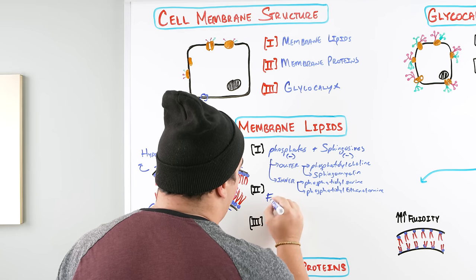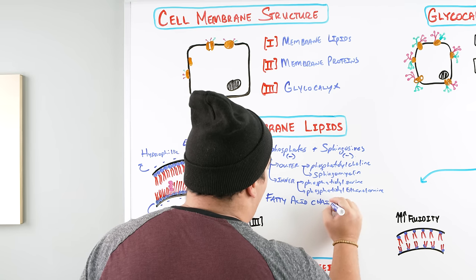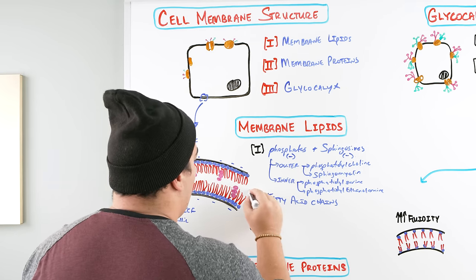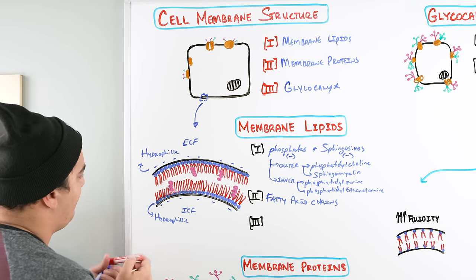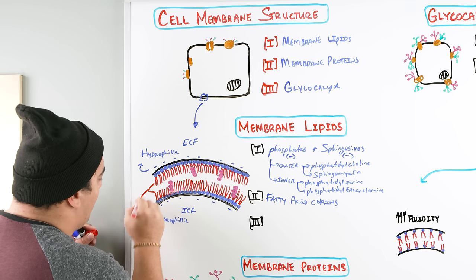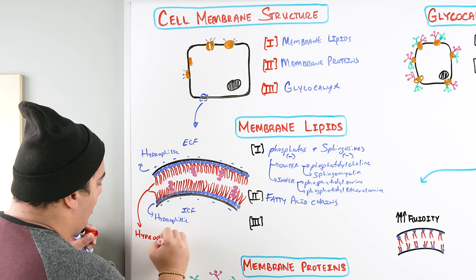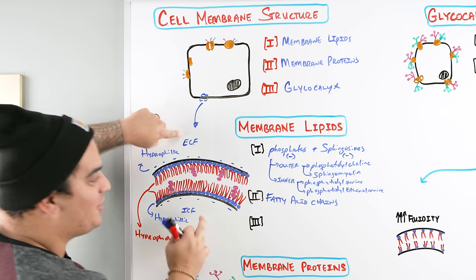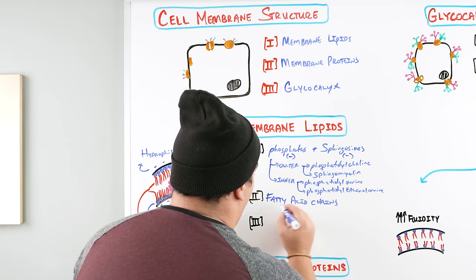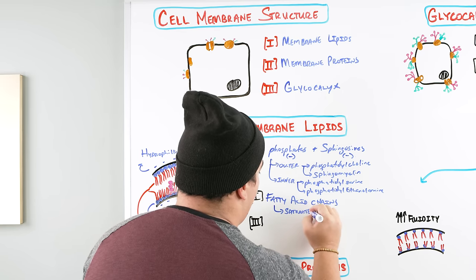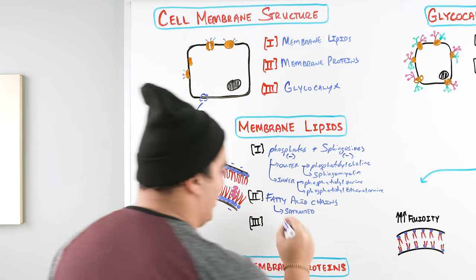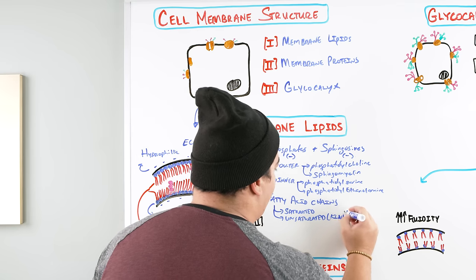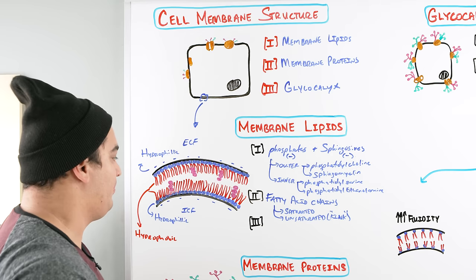The second component of the membrane lipids is the fatty acid chains. These are the squiggly lines extending from the phosphate heads, and they sit in the center of the membrane between the two leaflets. The fatty acid chains are hydrophobic — hydrocarbon chains that hate water — so they're tucked in the middle and do not contact the extracellular or intracellular fluid. There are two types: saturated, which have a straight structure, and unsaturated, which have a double bond giving a kink.